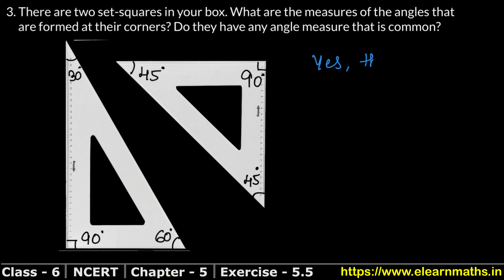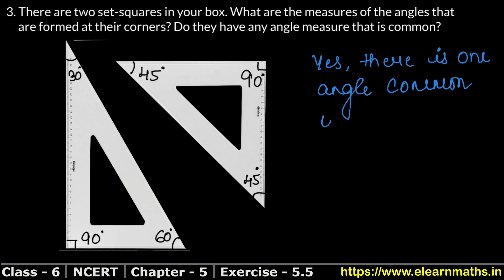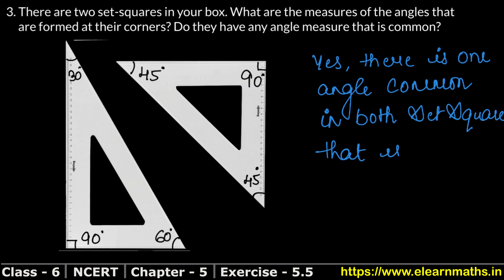Yes — there is one angle, 90 degrees, that is common in both set squares. Both set squares share a 90-degree angle. That is our answer.